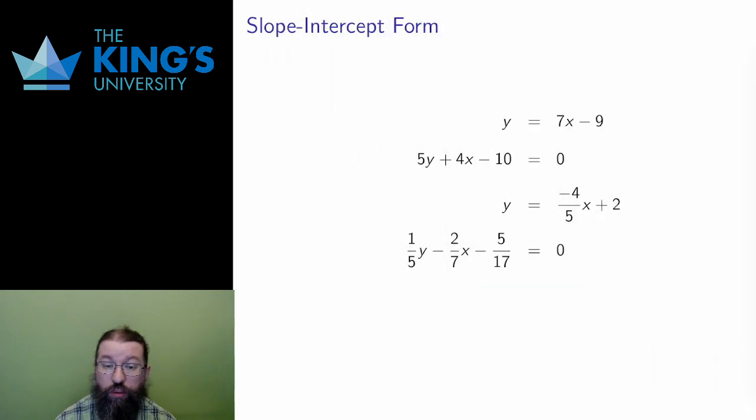The third line is also not in slope-intercept form. Again, I use algebra, taking the x and the constant terms to the right side, and in this case multiplying by 5 to isolate the y on the left. Then I can see that the slope here is 10/7, and the intercept is 25 over 17.